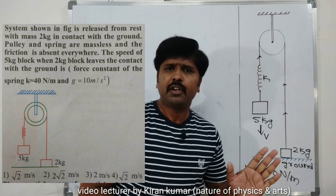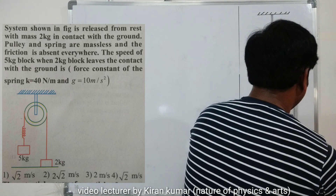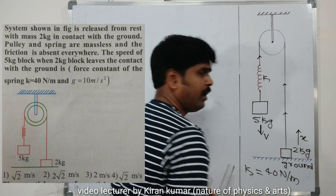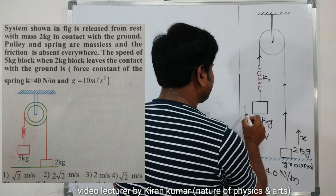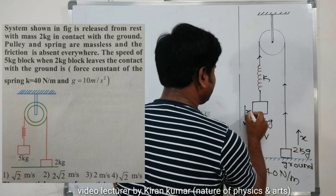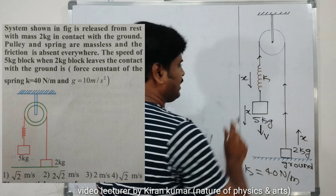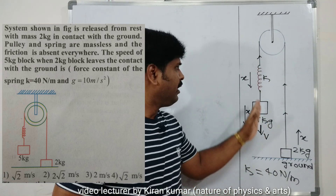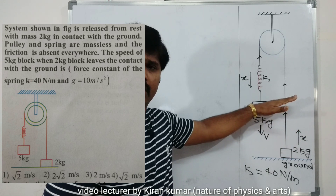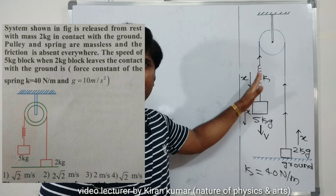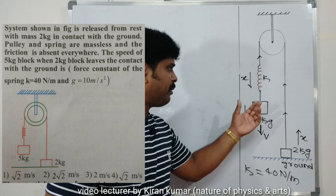When the contact is removed, the 2 kg block moves upward a distance x, and the 5 kg block also moves downward the same distance x. The spring is also elongated by the same distance x. As the spring moves upward by x and the 5 kg body moves downward by x, the extension of the spring is x.